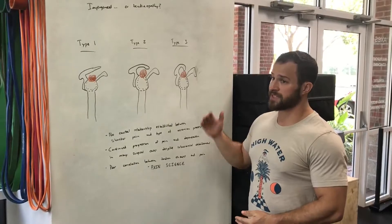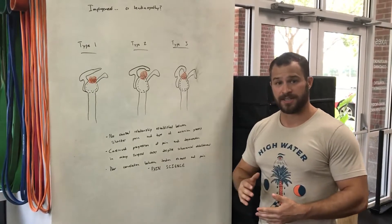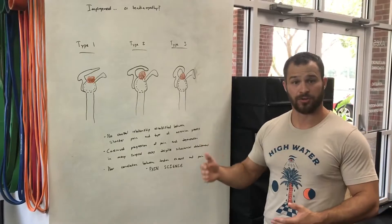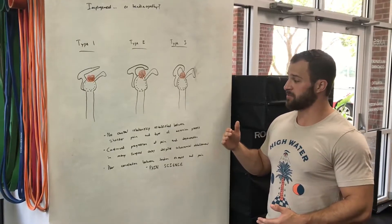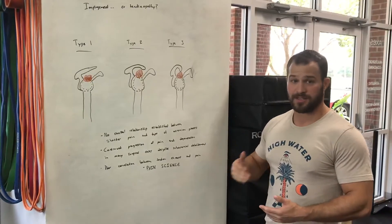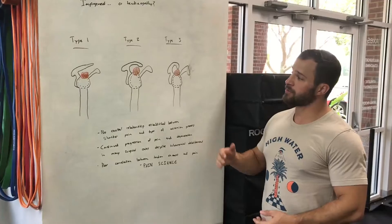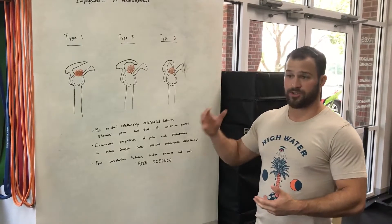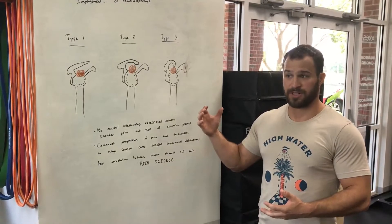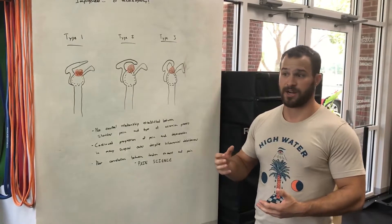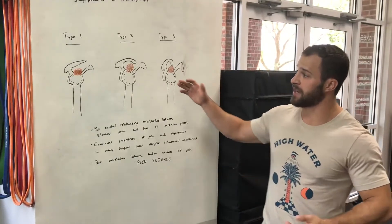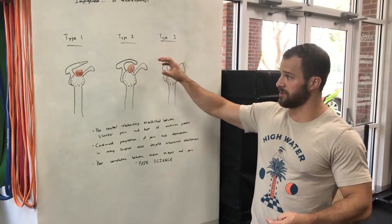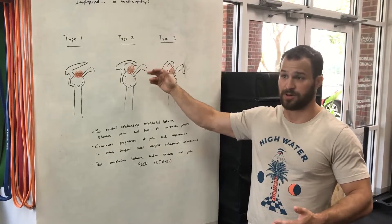In a type 2 acromion process, there's a little bit of a curve, and when you lift your arm up, the idea is that you're going to bump that supraspinatus tendon up against that type 2 acromion process or against the coracoacromial ligament, and it's going to start creating damage over time, fraying away that tendon. A type 3 acromion is almost like a hook straight down into that supraspinatus tendon, and the idea is that type 3s are more likely to experience this impingement syndrome.